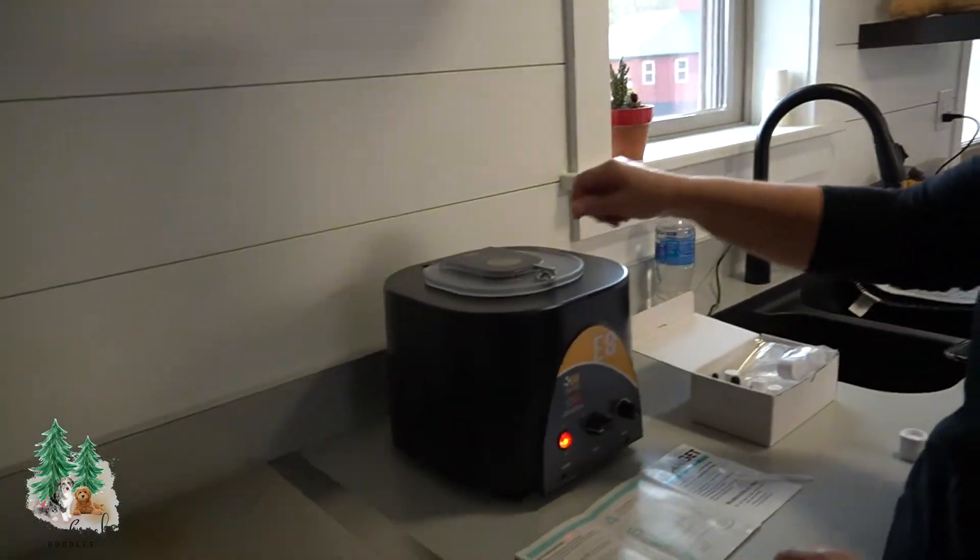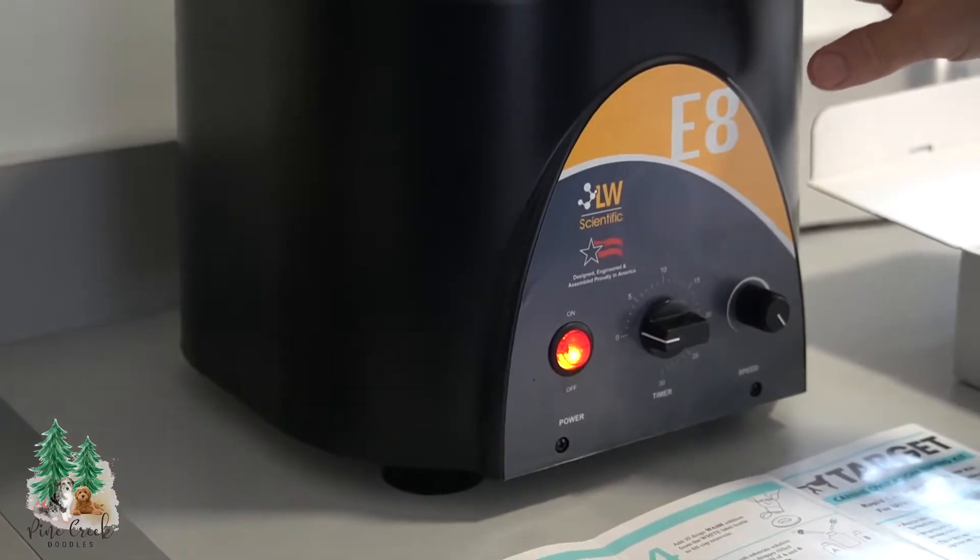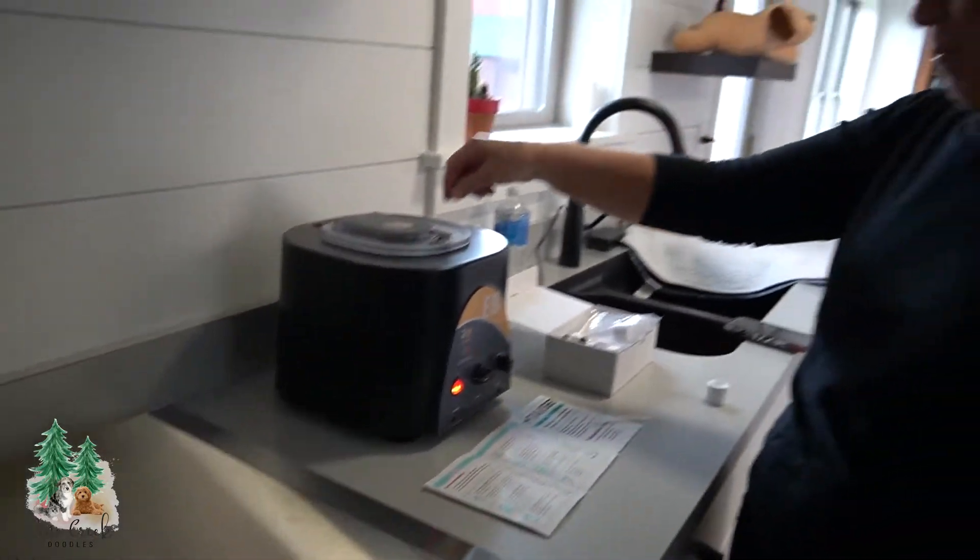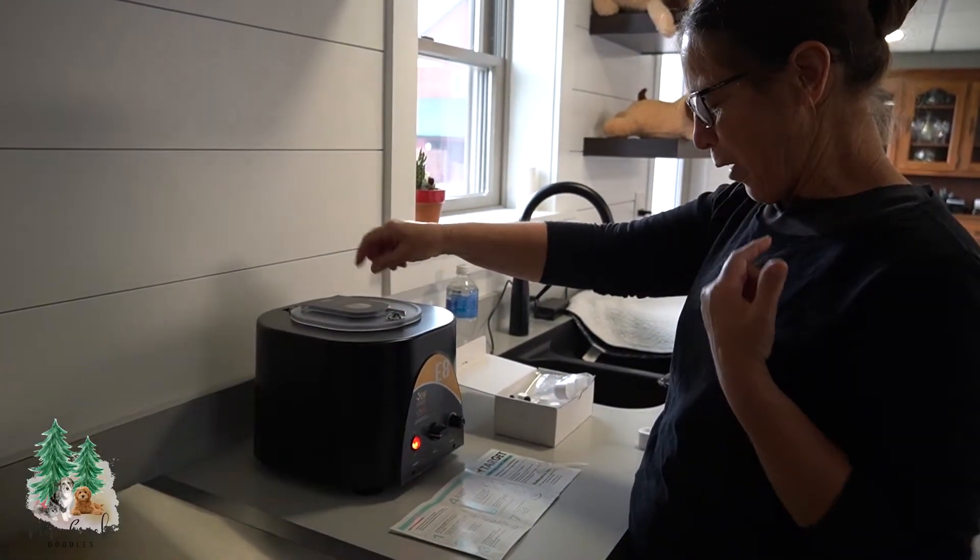Okay, so explain what you're doing here. So this is my, I'm not sure what I want to call it, it's my spinning machine is what I call it to test my females to see if they are ready to be bred.